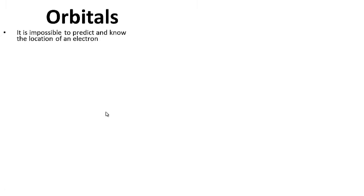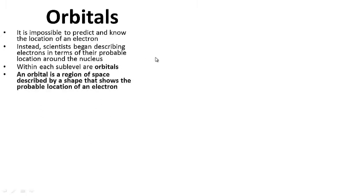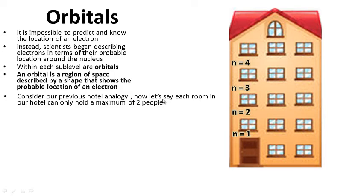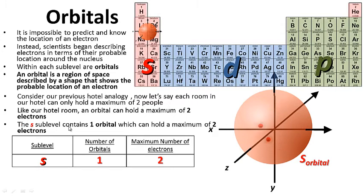Orbitals. It is impossible to predict and know the exact location of an electron. Instead, scientists describe electrons in terms of their probable location around the nucleus — we don't know where electrons really are, but we know where they can kind of hang out. Within each sublevel are orbitals. An orbital is a region of space described by a shape that shows the probable location of an electron. Like a hotel room that can hold a maximum of 2 people, an orbital can hold a maximum of 2 electrons. The S sublevel contains 1 orbital, which can hold a maximum of 2 electrons.